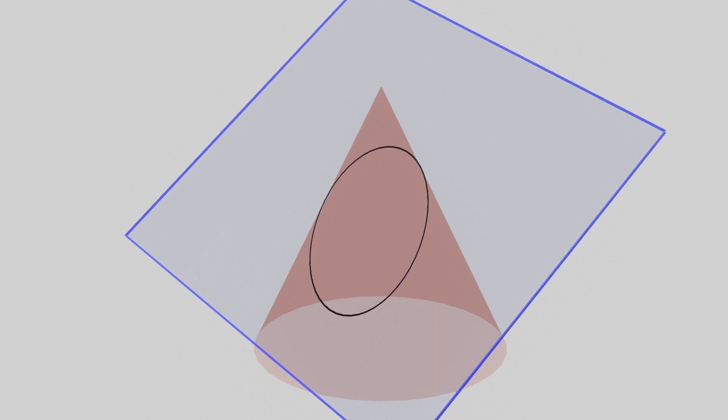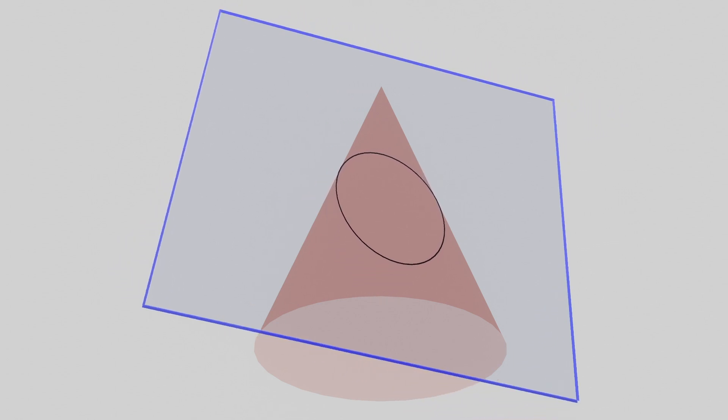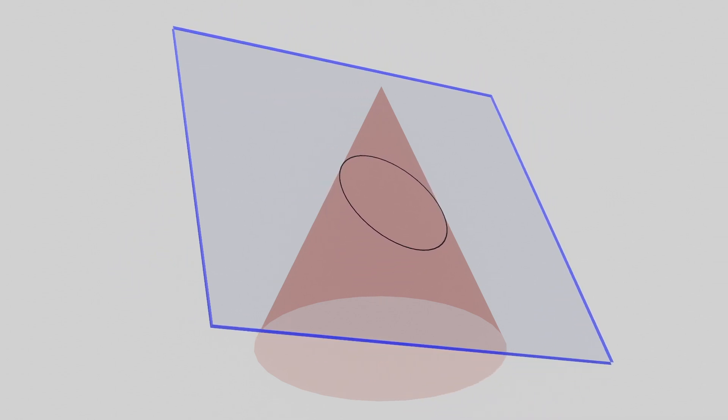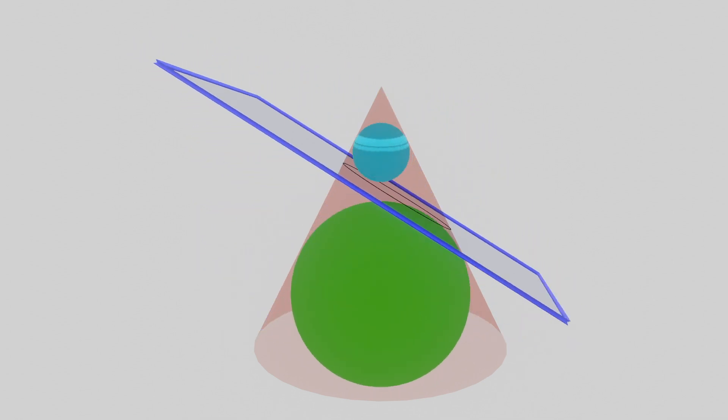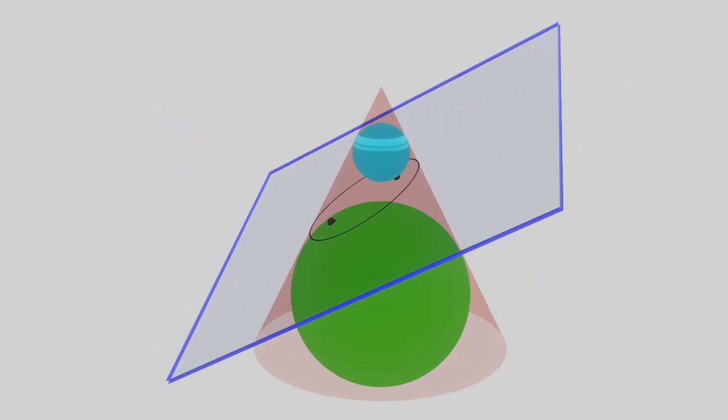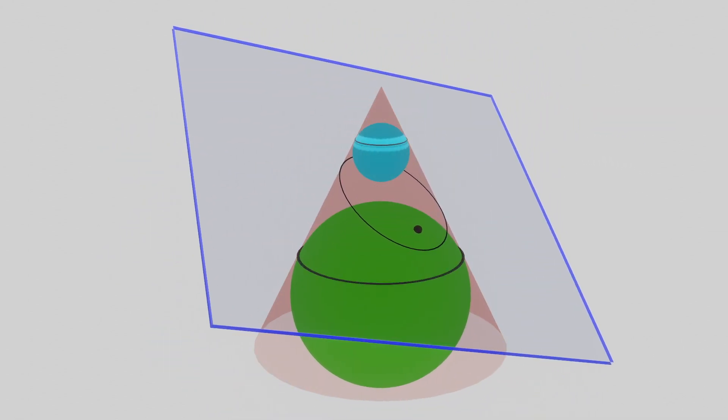Now, the following very clever idea was posed by a French mathematician named Dandelin, and he suggested placing these two spheres inside the cone so that they are both exactly tangent to the plane at one point and to the cone at these circles.